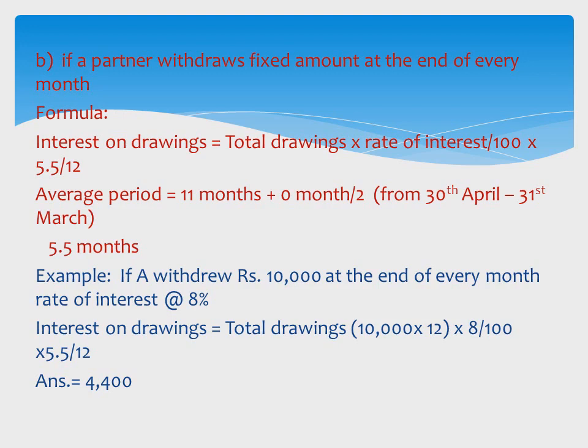Example: If A withdraws ₹10,000 at the end of every month at 8% interest. Total drawings = 10,000 × 12 = ₹1,20,000. Interest = 1,20,000 × 8/100 × 5.5/12 = ₹4,400.